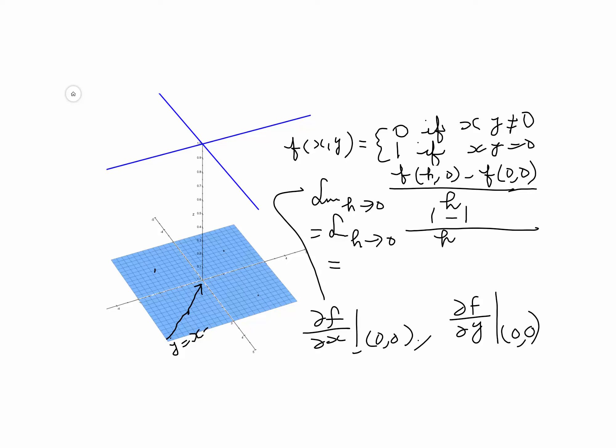So what do we get? We get 0 over h, which is going to be 0. We are taking the limit as h goes to 0. Up to this point, we can manage to keep h not equal to 0. So no matter how we proceed to (0, 0), keeping y constant,